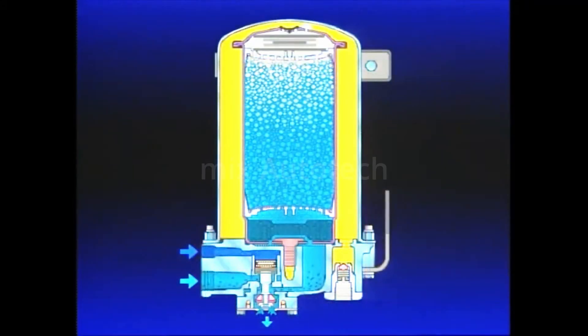This super dry air regenerates the desiccant material by stripping away accumulated water vapor. Contaminants in the oil separator are also carried away through the open purge valve.